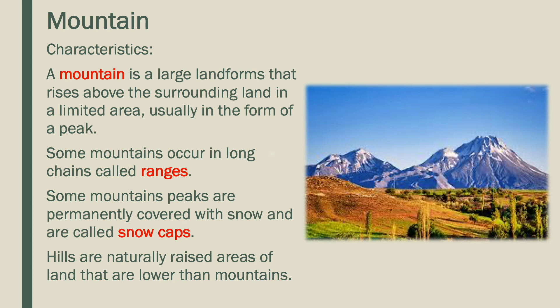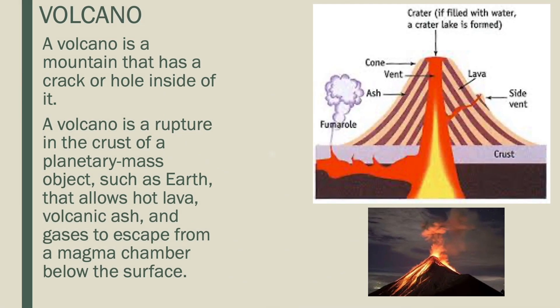Hills are naturally raised areas of land that are lower than mountains. Another type of landform is a volcano. A volcano is a mountain that has a crack or hole inside of it — a rupture in the crust of a planetary mass object, such as Earth, that allows hot lava, volcanic ash, and gases to escape from a magma chamber below the surface.